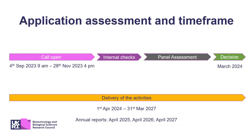Regarding timelines, the call is already open — it opened on the 4th of September and will close on the 20th of November at 4pm. We strongly advise you to submit your applications before this deadline, preferably one day in advance, to ensure we receive them safely. Applications will go through internal checks to confirm they fit the scope of the call, then go to panel assessment. We aim to have a decision on which proposals will be funded by March 2024, so awardees can start delivering activities from April 2024. The award will last three years, finishing by March 2027.